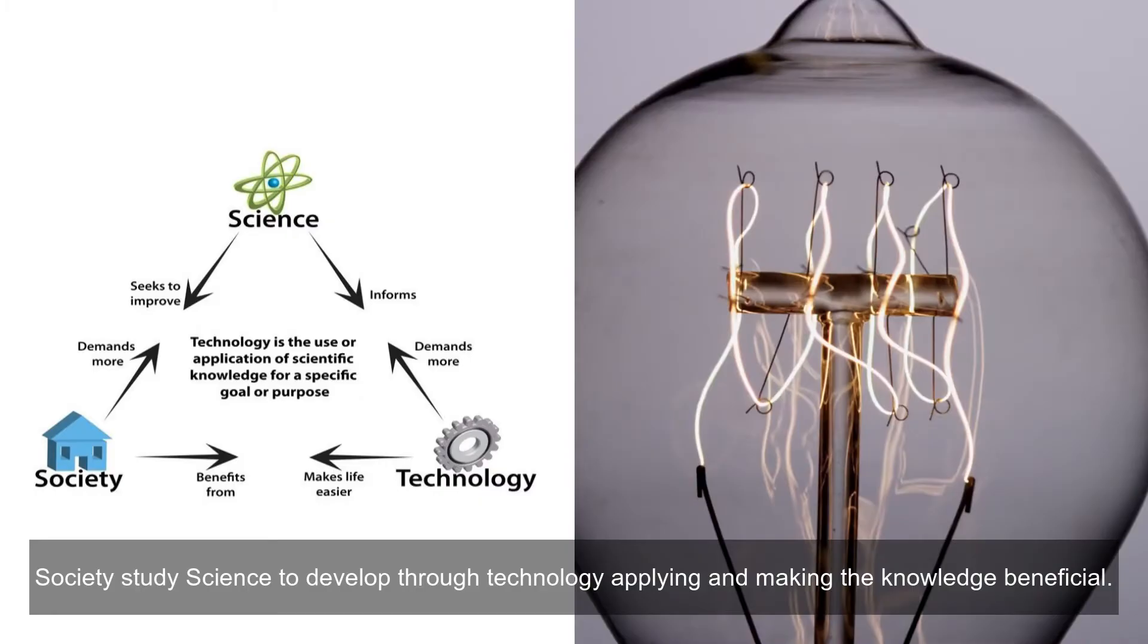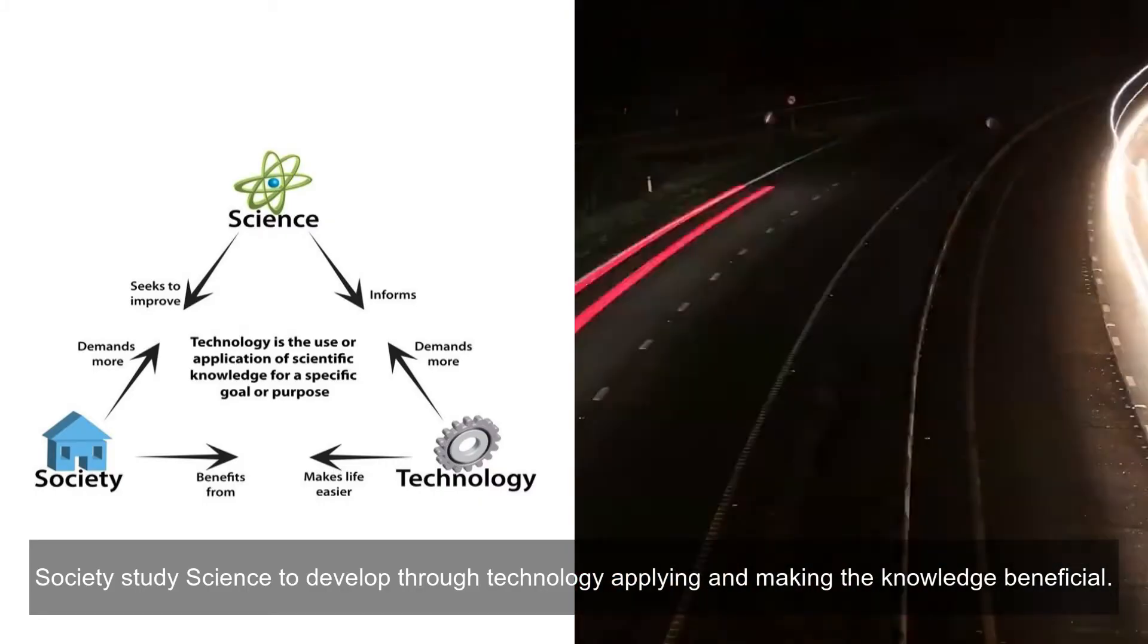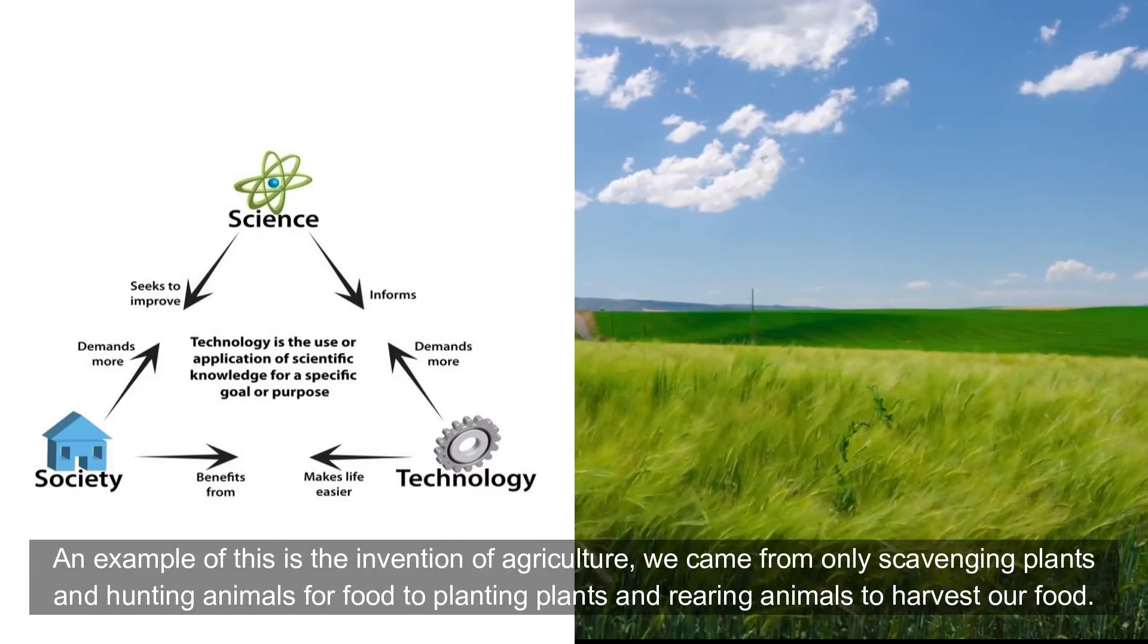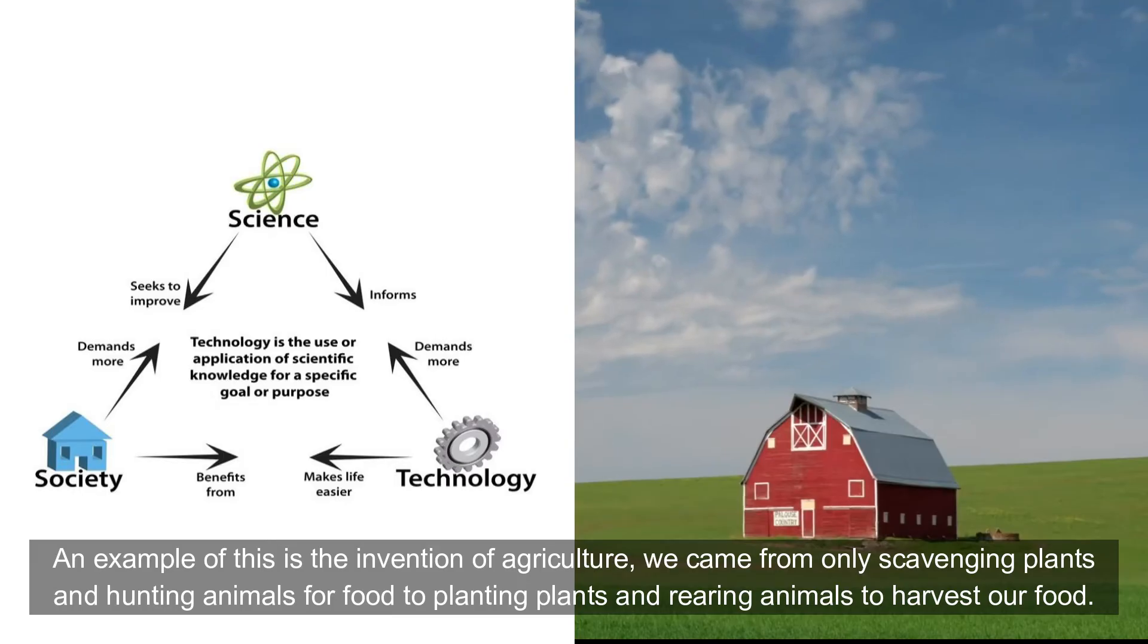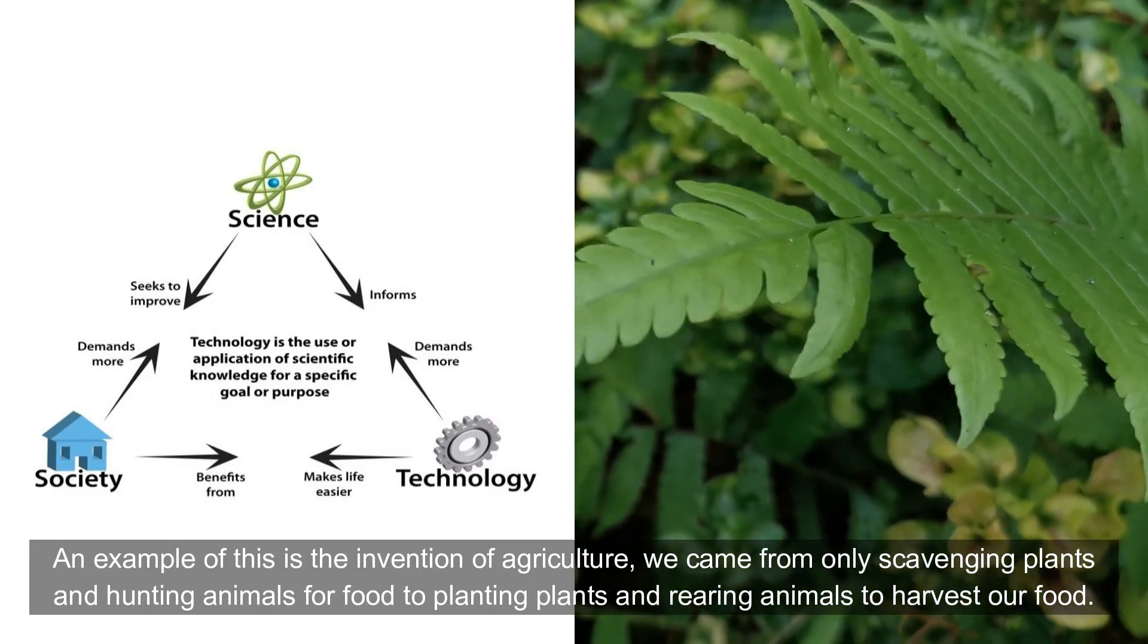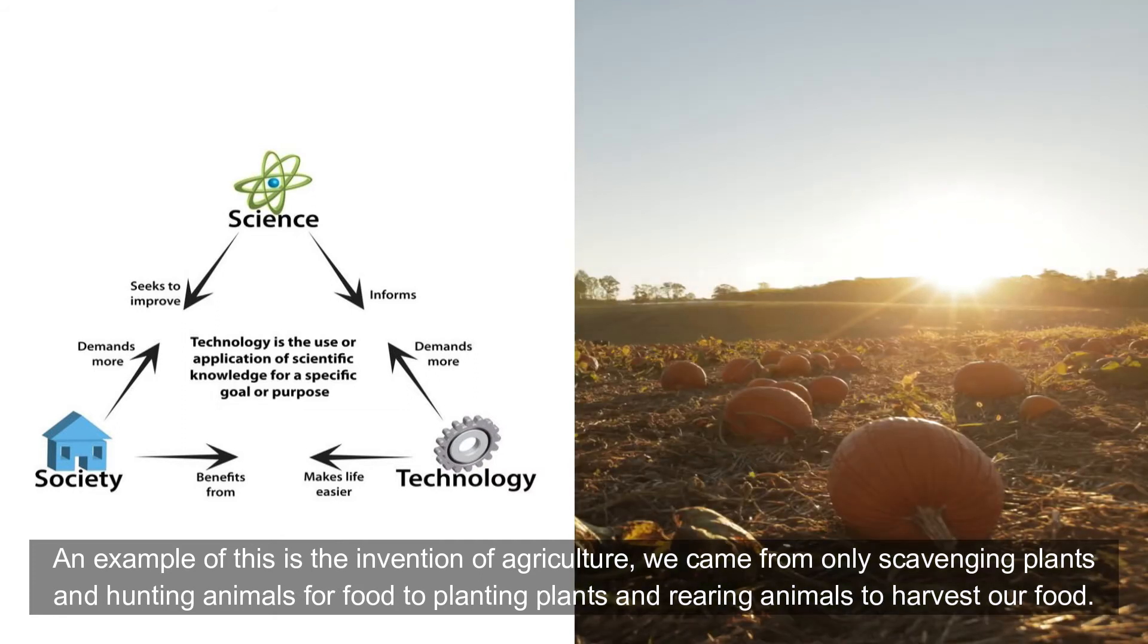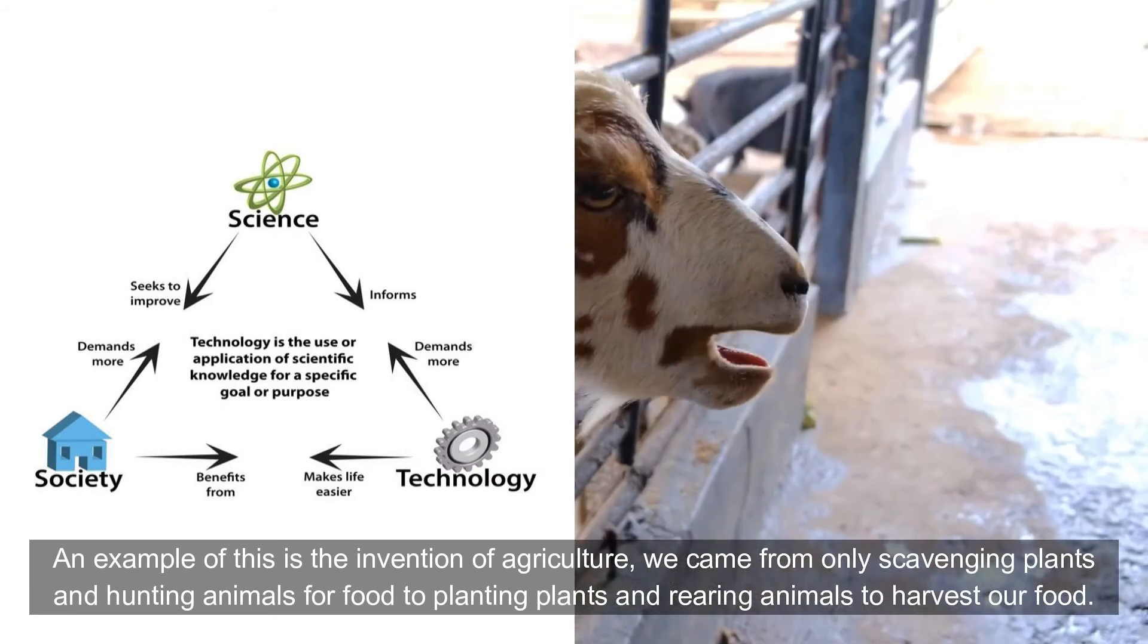Society study science to develop through technology, applying and making the knowledge beneficial. An example of this is the invention of agriculture. We came from only scavenging plants and hunting animals for food to planting plants and rearing animals to harvest our food.